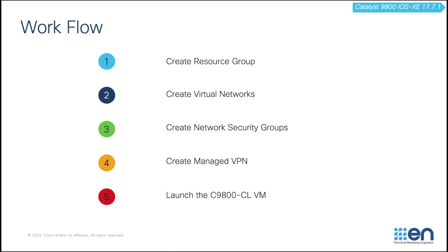Now let's talk about the workflow and then go into the Azure portal to build the deployment. First, we are going to create a resource group. Second, we are going to create virtual networks. After that, we are going to create a network security group. Then we are going to create a managed VPN. Finally, we are going to launch the C9800 CL virtual machine.